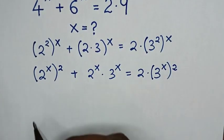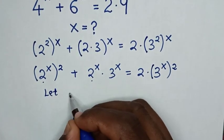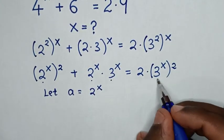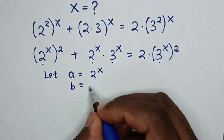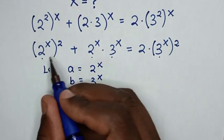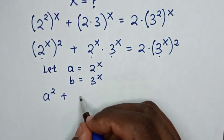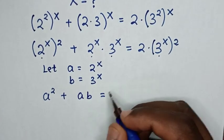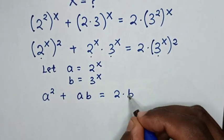In the next step, 2 power x is common, so we let a equal 2 power x. Also 3 power x is common, so we let b equal 3 power x. Then our equation becomes a squared plus a times b equals 2 times b squared.